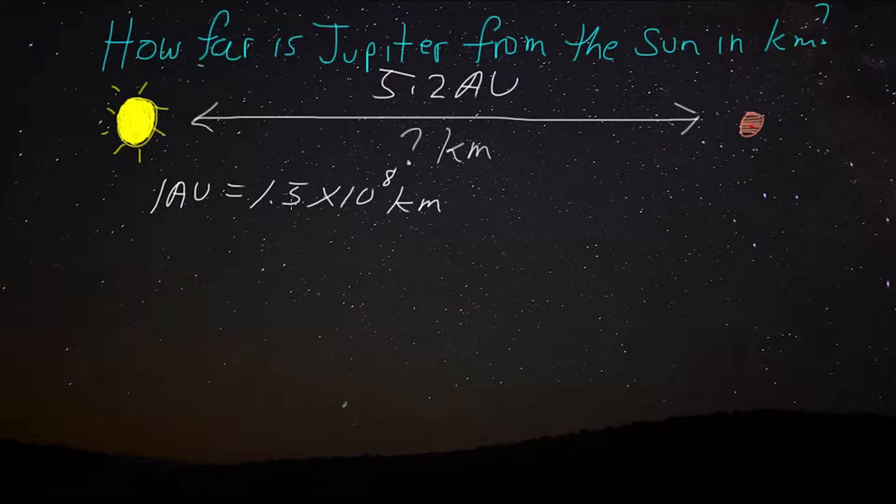So, if 1.5 times 10 to the 8th kilometers or 150 million kilometers is the same thing as saying 1 AU, that's like saying that this ratio is basically like the value of 1. I mean, that's really what we're saying.